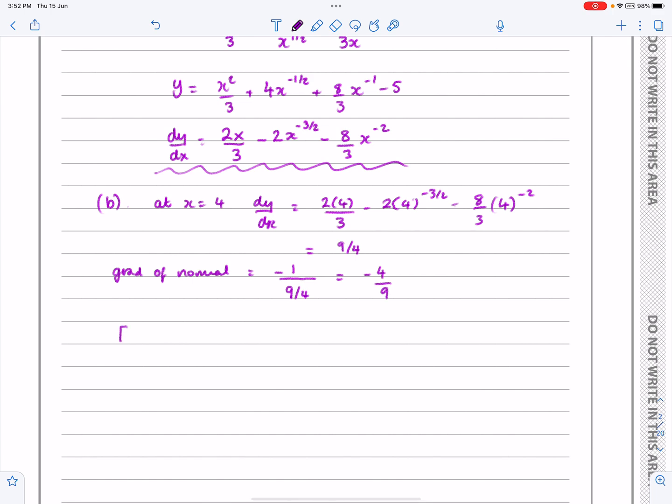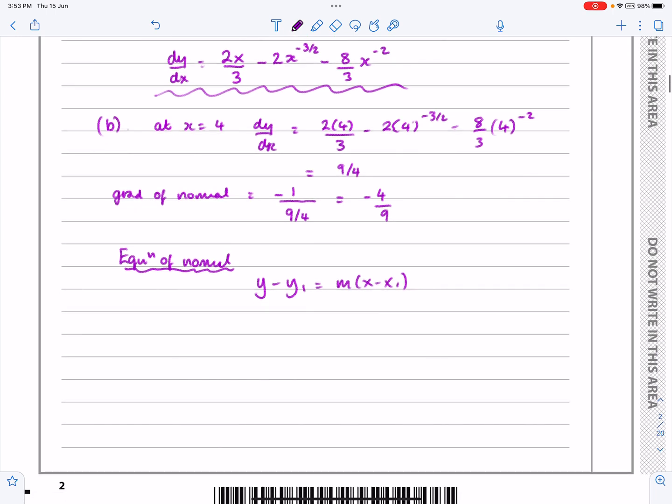So, now we're looking for the equation of a normal, but the equation of a straight line, really. We're going to use the formula for the equation of a straight line. The equation of any straight line is y minus y1 equals m times x minus x1. And in the question, they must have given me these three things, x1, y1, and m. So, x1, y1 is just the coordinate. That was 4, 3. And m is minus 4 over 9, not 9 over 4. That would be if we wanted the equation of a tangent.